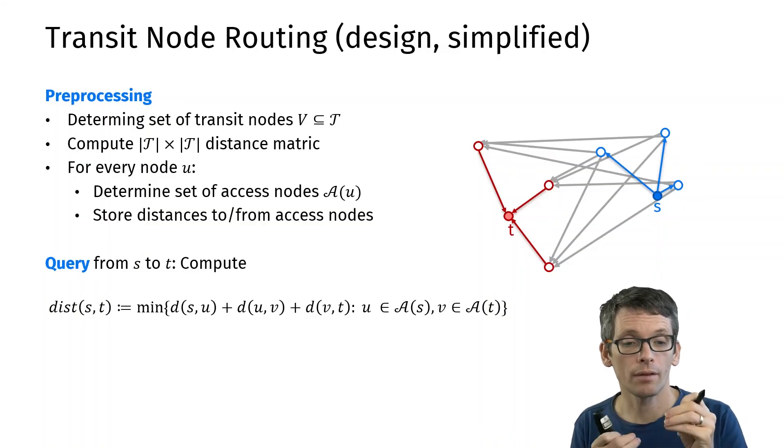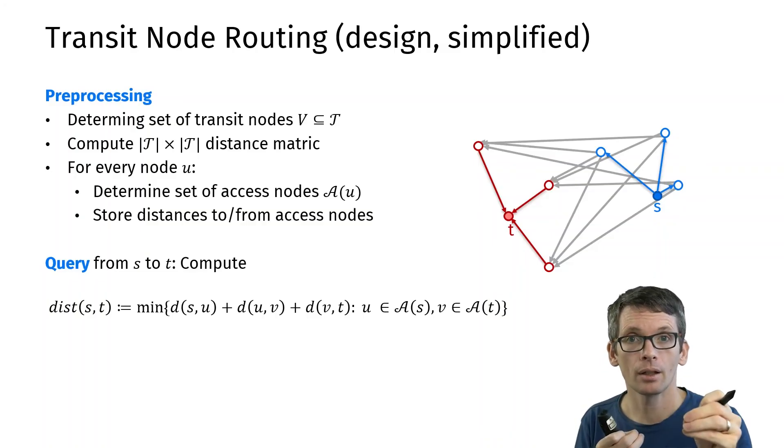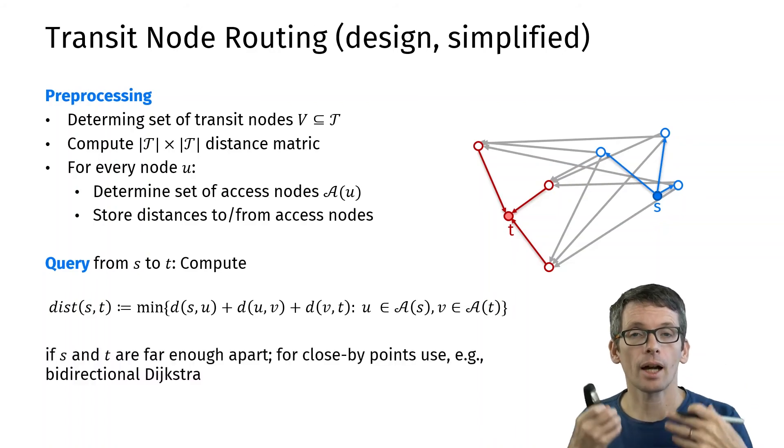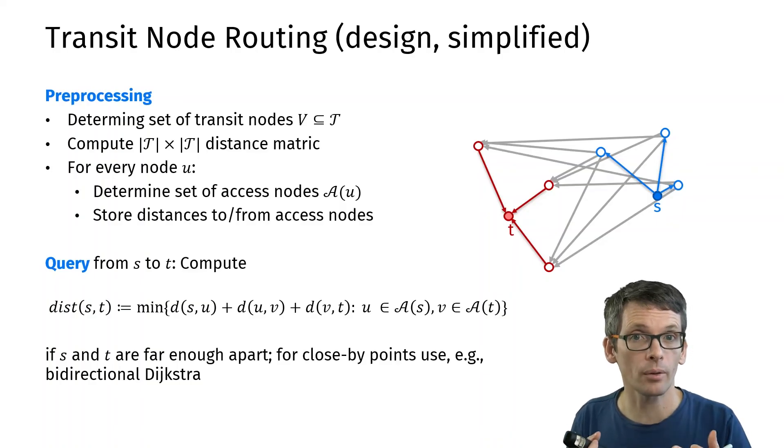Now this only works if s and t are far enough apart. If s and t are close by, then I can use a different algorithm. For instance, I can simply then use bidirectional Dijkstra. And because they are very close, it will also be very fast.